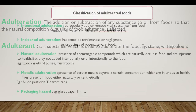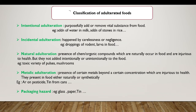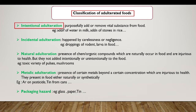There are different types of food adulteration: intentional adulteration, incidental adulteration, natural adulteration, metallic adulteration, and packaging hazard. The first type, intentional adulteration, is when a vital substance is purposefully added or removed from the food — for example, addition of water in milk or addition of stones in rice.